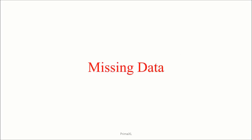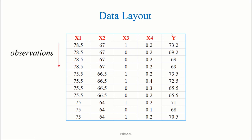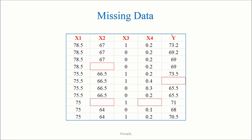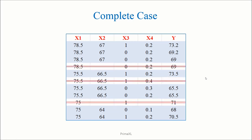Missing data. For example, a dataset may look like the following. Usually, the different variables are organized as columns and the different observations are organized as rows. We may have one or more values missing from the dataset as we can see here. The complete case refers to the complete rows, so the shaded cells are the complete case. Often, we want to keep only the complete rows by eliminating those which are not complete.